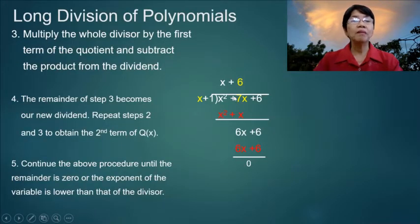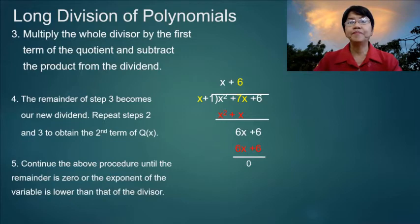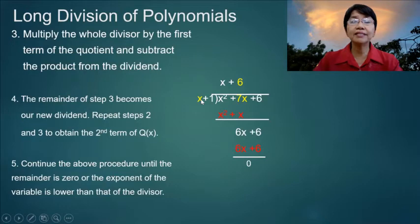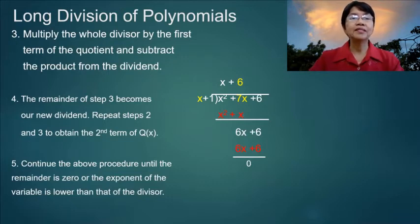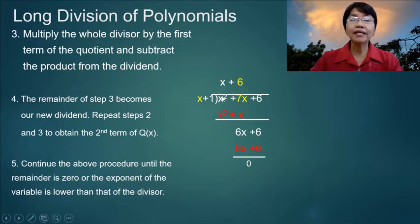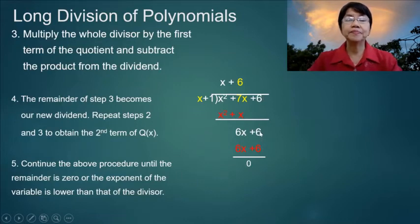Step three: multiply the whole divisor by the first term of the quotient and subtract the product from the dividend. So x times x equals x squared, and x times 1 equals x. The product is shown in red, which means you have to change the sign of the subtrahend. So x squared minus x squared is 0, and 7x minus x equals 6x. Then bring down 6. This is now our new dividend: 6x plus 6.